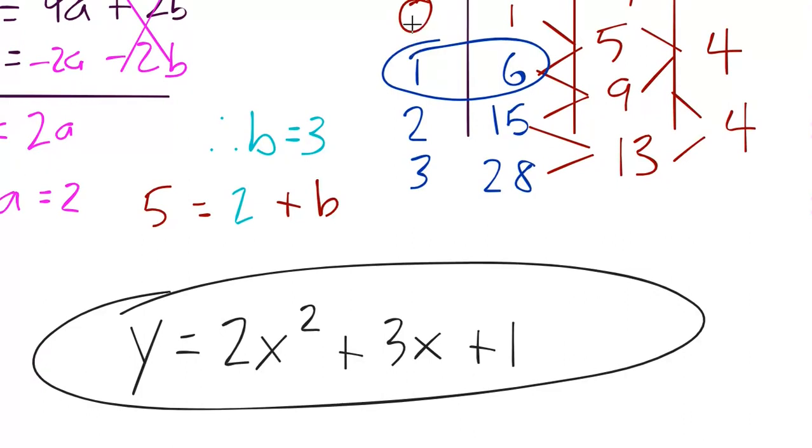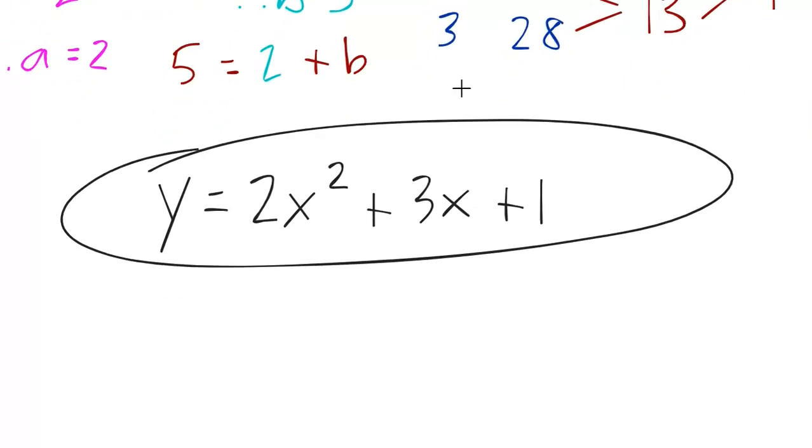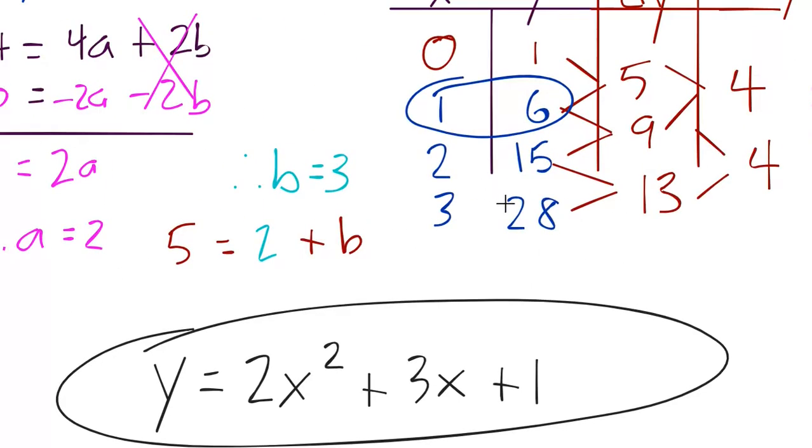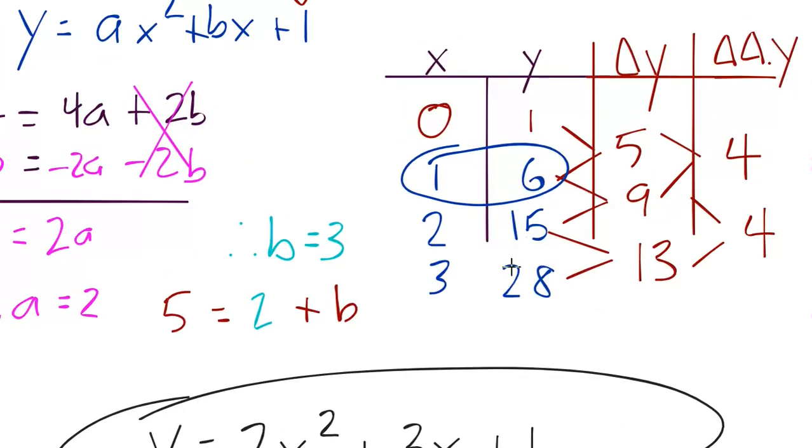That quadratic would represent this. If you plug in 0, you get 1. If you plug in 1, you get 2 times 1 plus 3 times 1 plus 1. That's 6. If we plug in 3, that's the only one that we haven't tested. But just to be sure, maybe we got something wrong. If we plug in 3, we get 2 times 3 squared, which is 9, plus 3 times 3, which is 9. So 18 plus 9, that's 27, plus 1 is 28. And that's exactly what our y value is when x is 3.